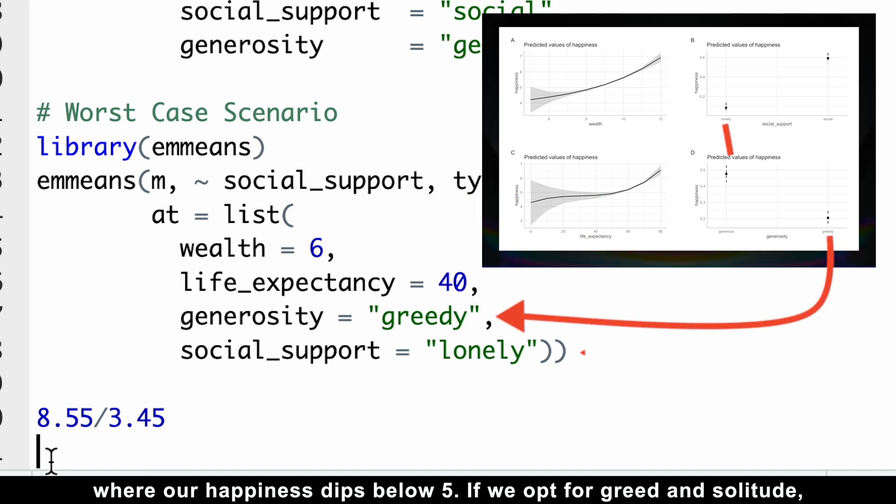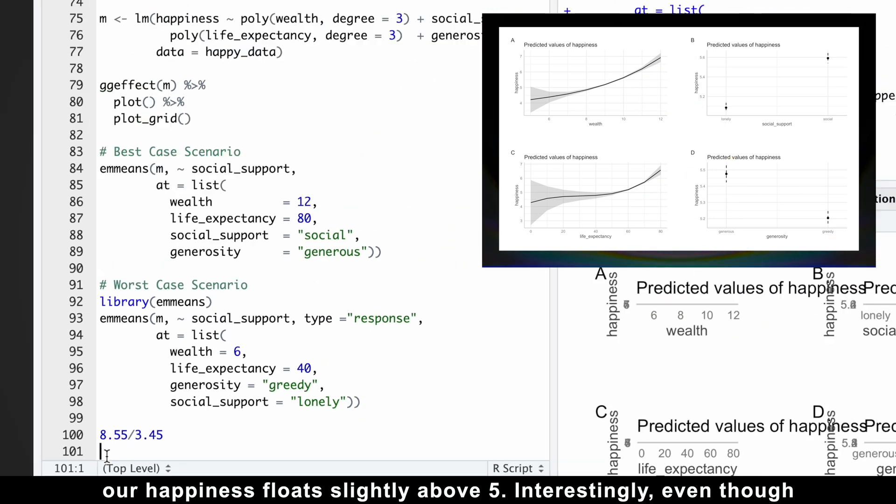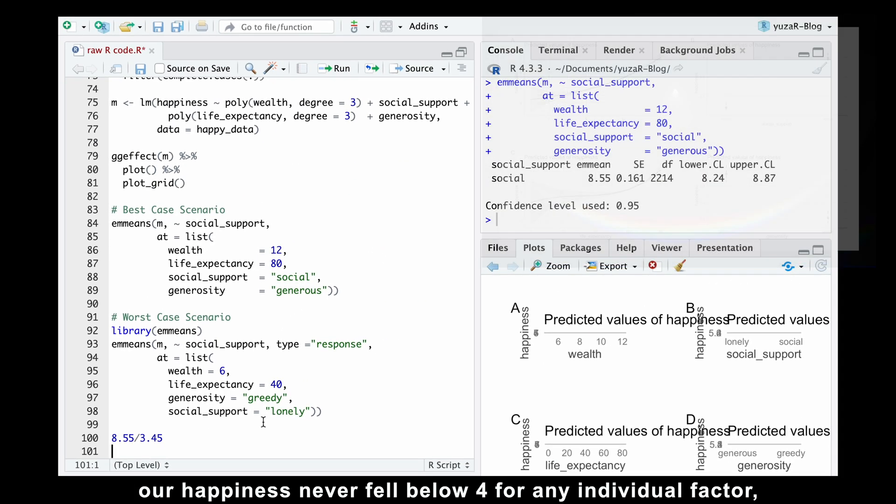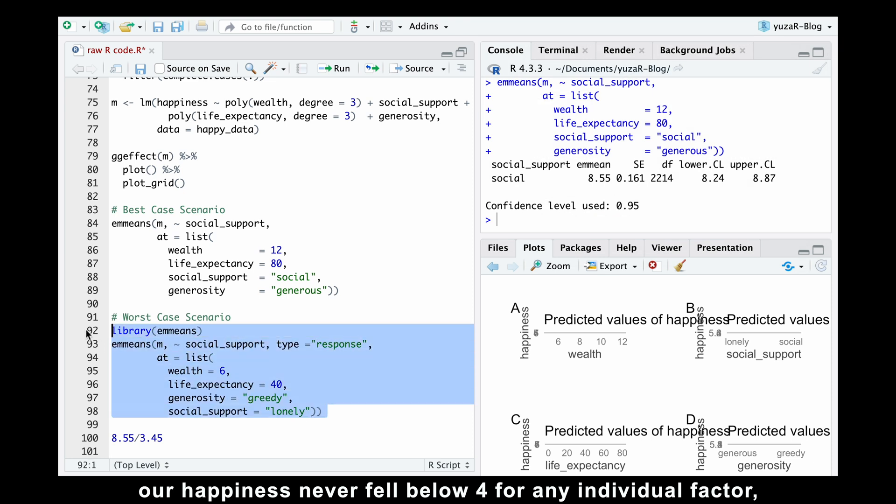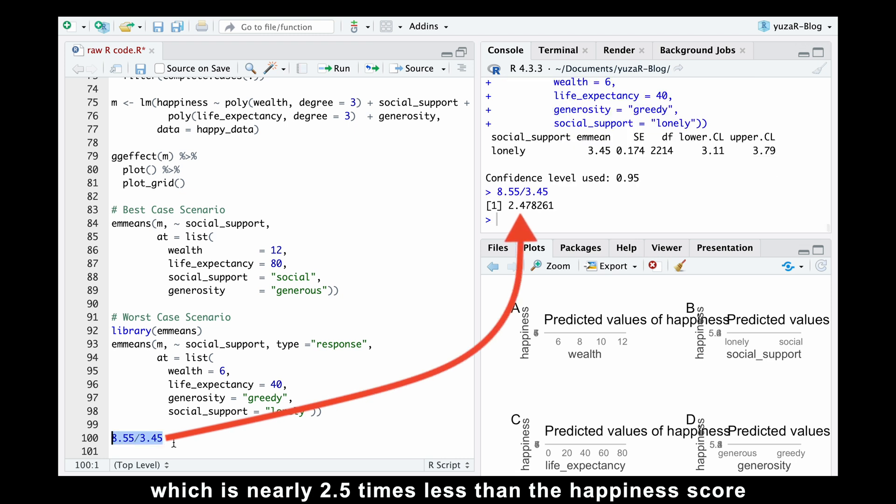If we opt for greed and solitude, our happiness floats slightly above 5. Interestingly, even though our happiness never fell below 4 for any individual factor, the overall happiness score dropped to 3.4, which is nearly two and a half times less than the happiness score in the best-case scenario.